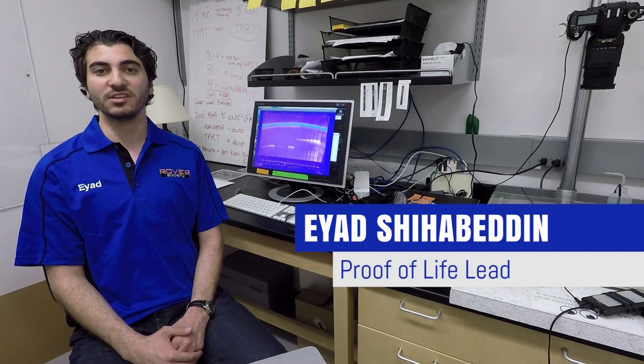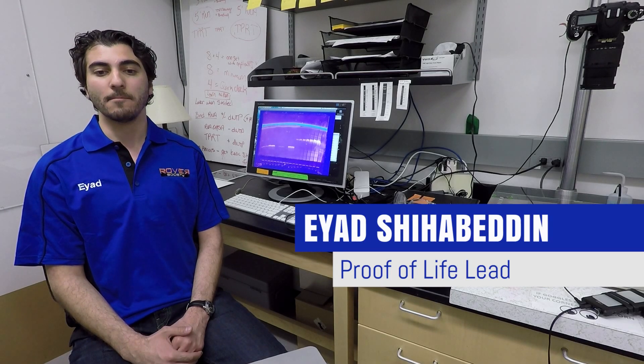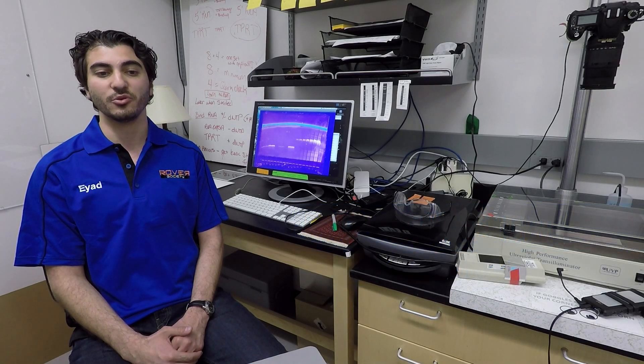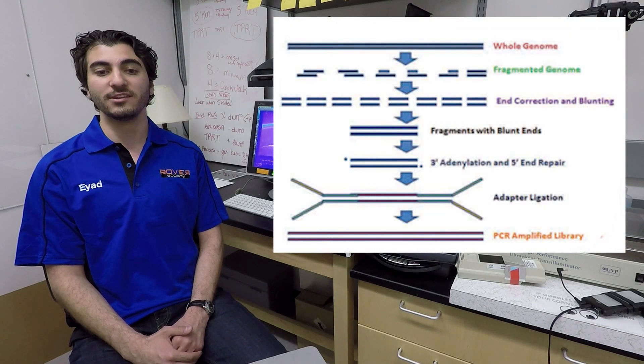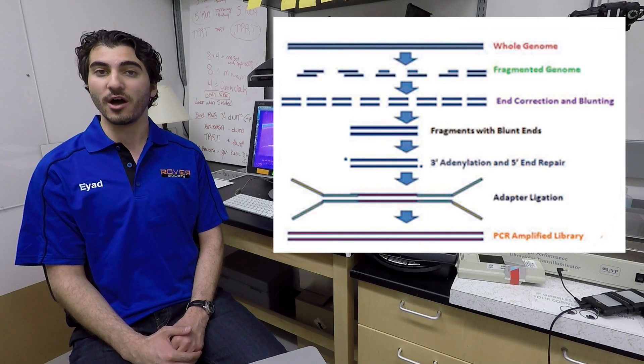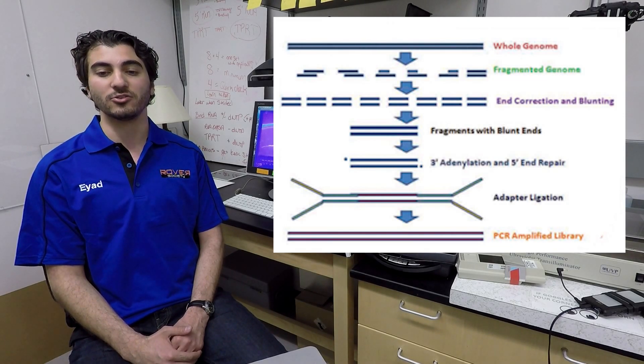Our proof of life team proposes that life on Mars may be identified through the sequencing of nucleic acids via next-gen Illumina de novo sequencing. Through this process, genomes, whether novel or similar to ones on Earth, may be identified and compared to life on Earth.